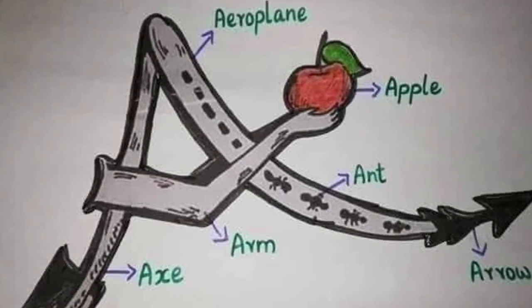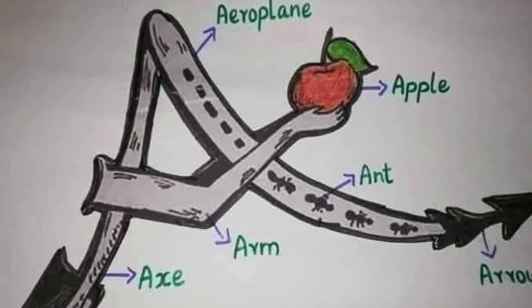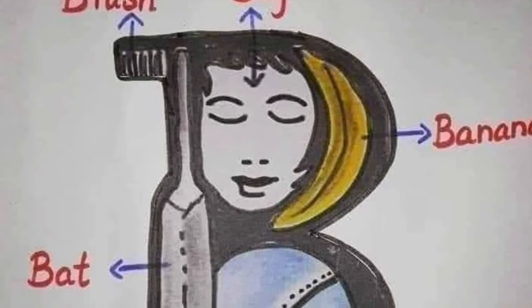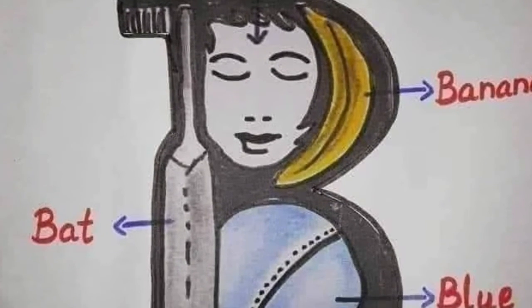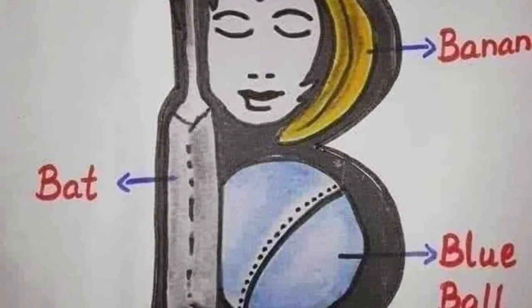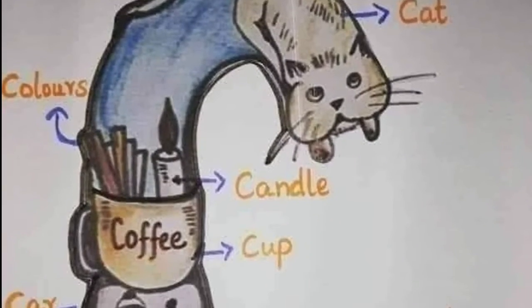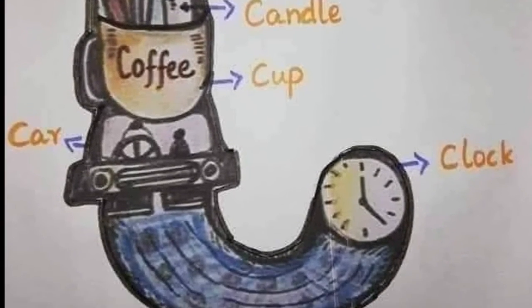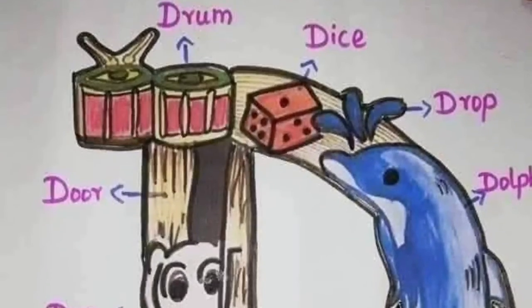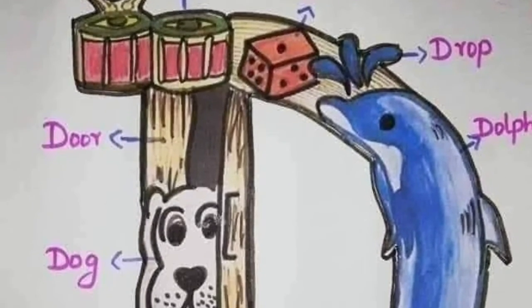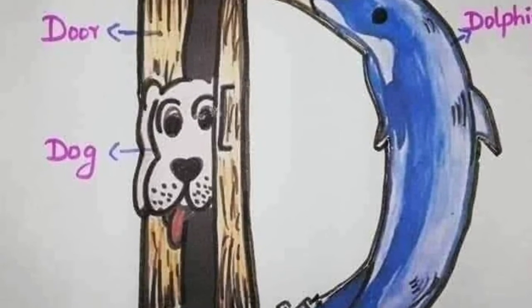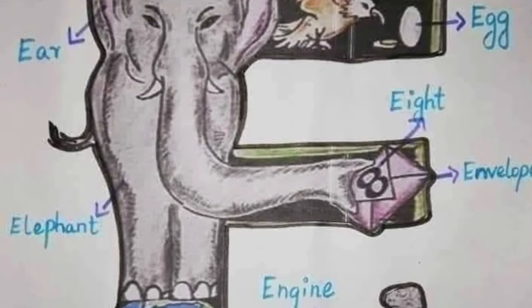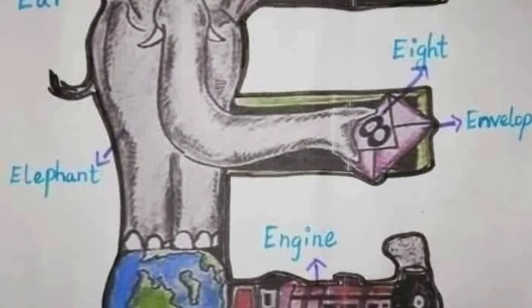A for apple, B for banana, C for cat, D for drop, E for elephant.